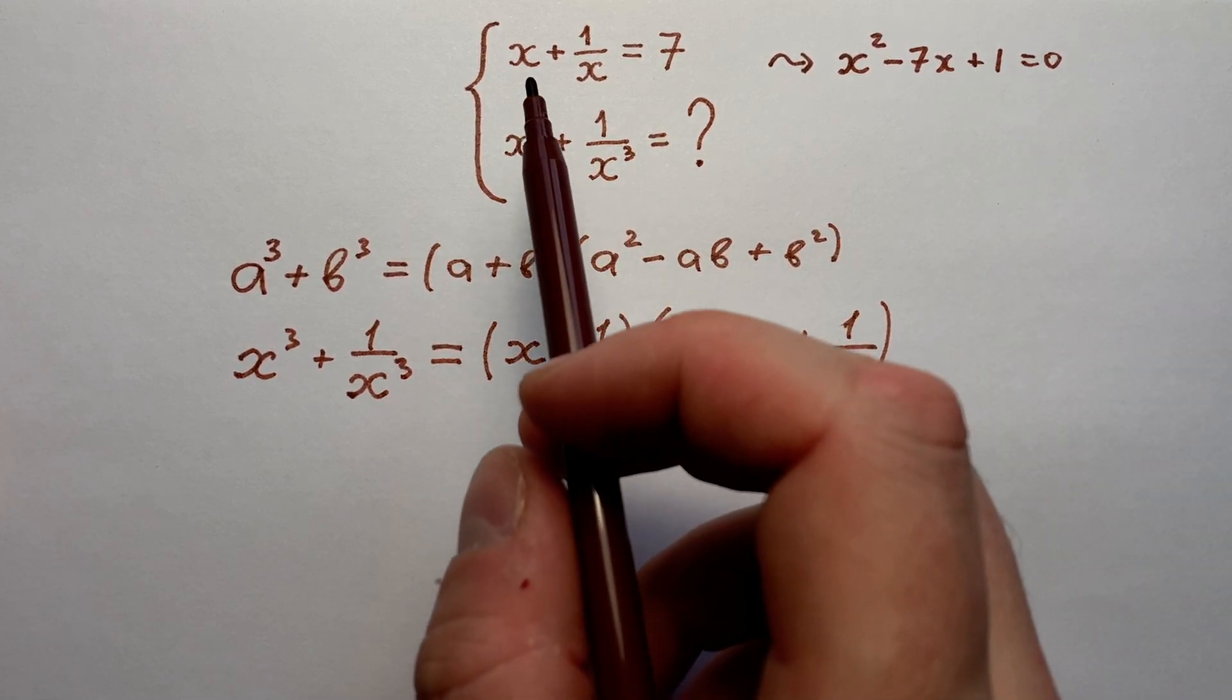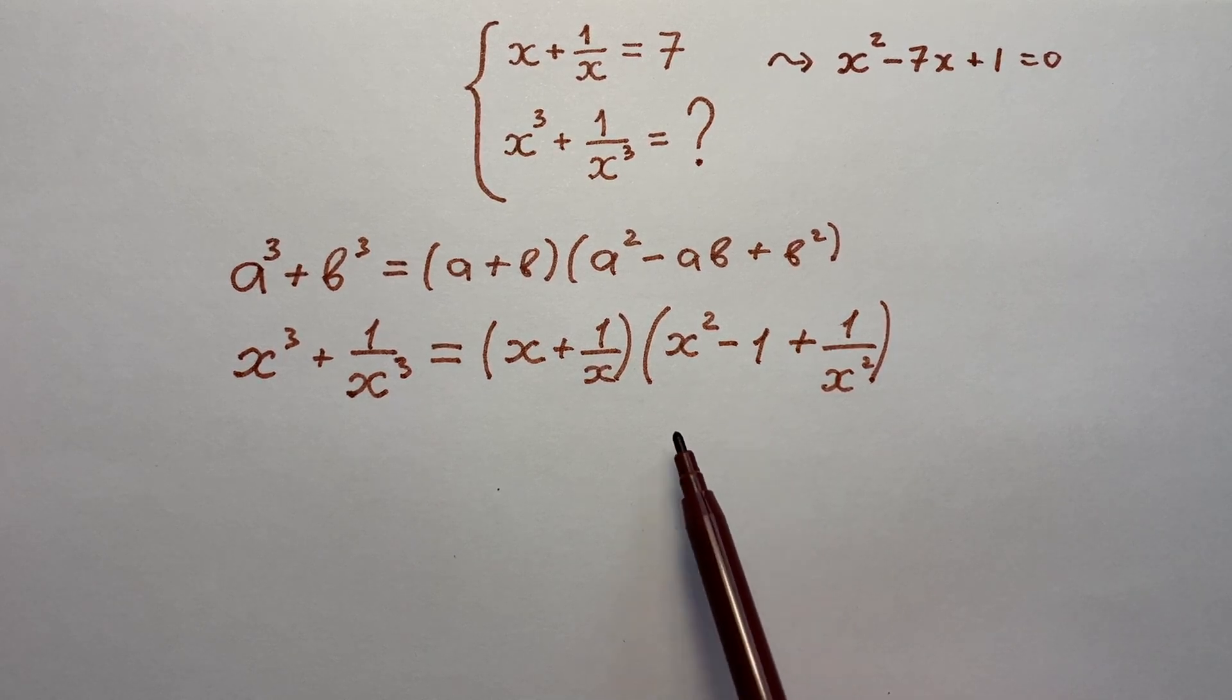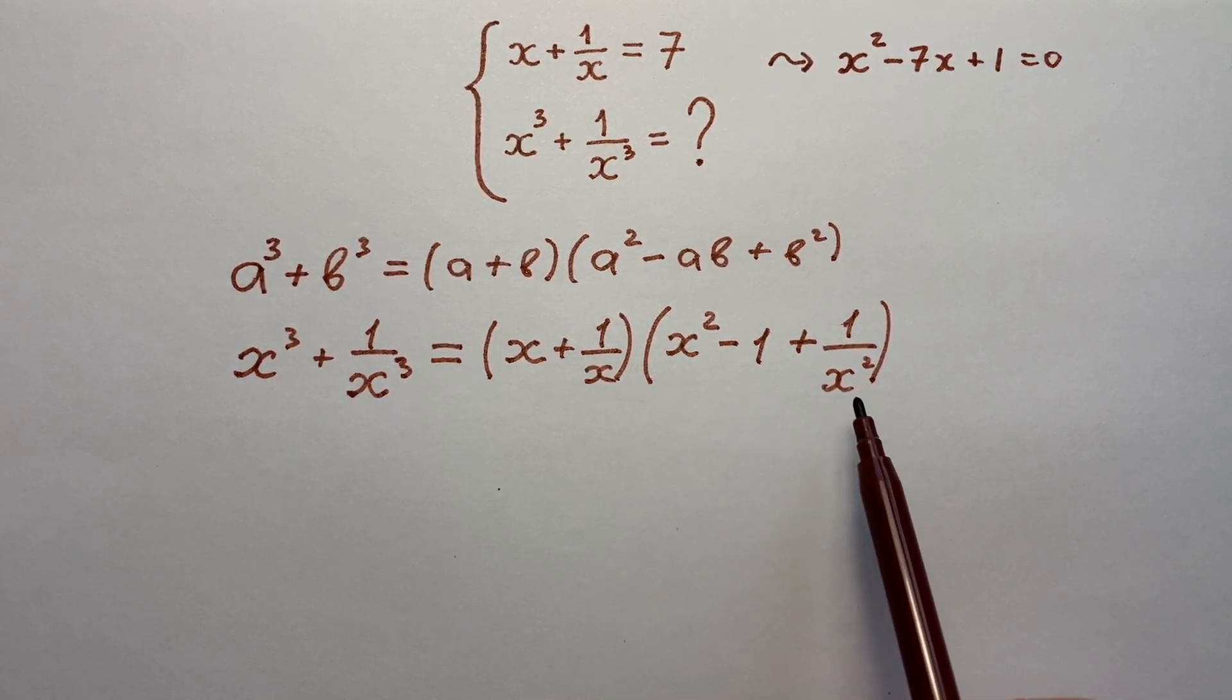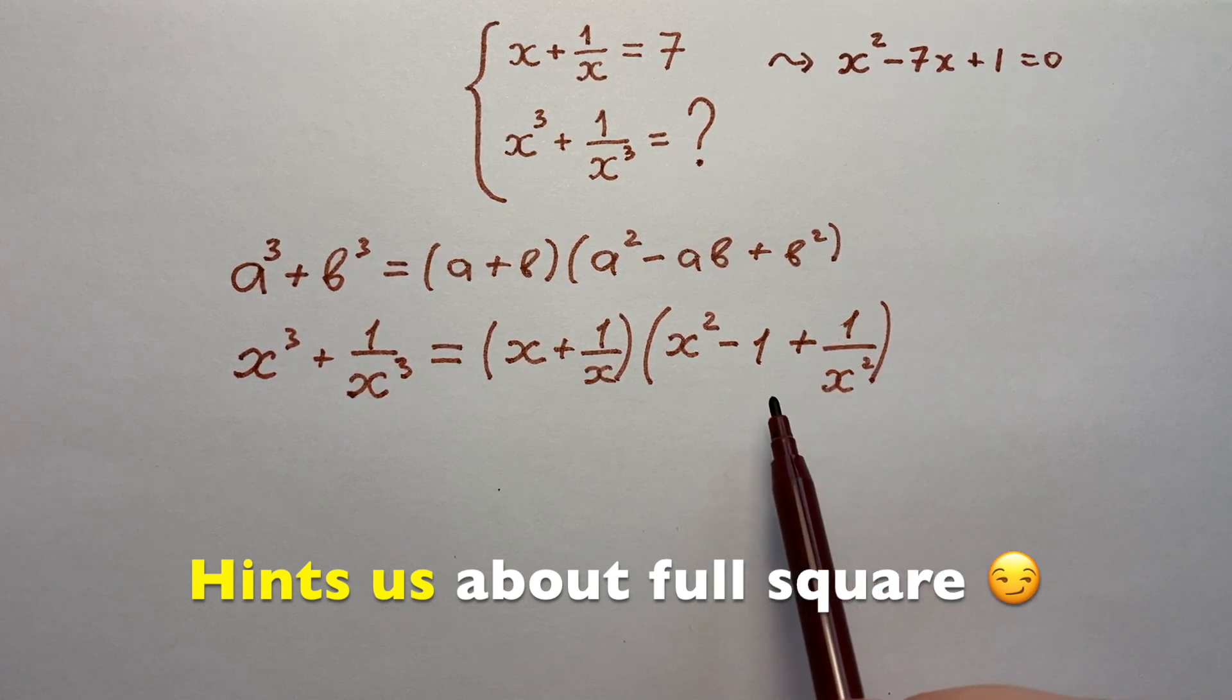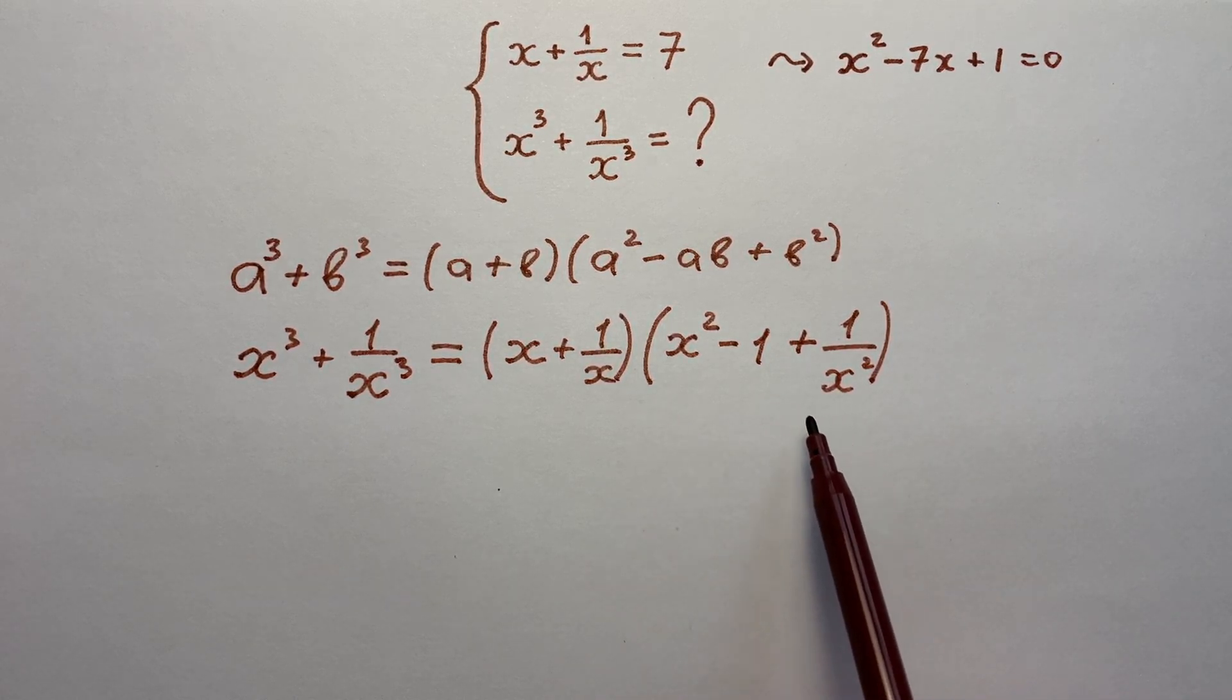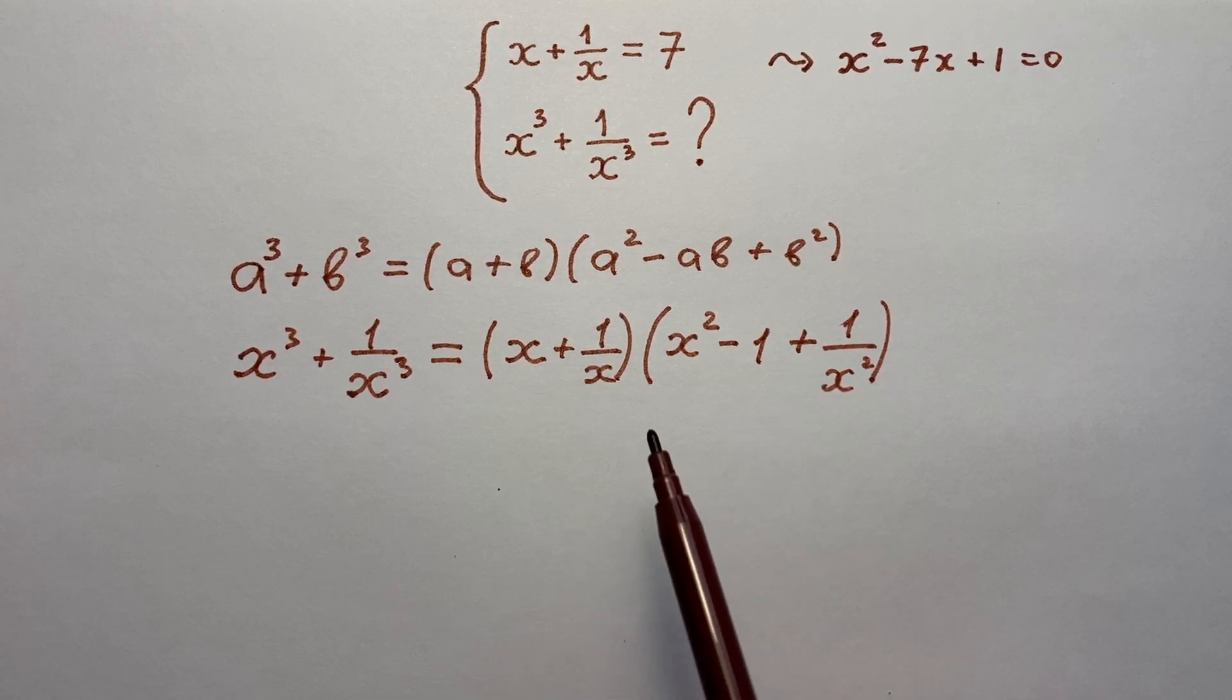First bracket we already know this value x + 1/x = 7. But what about second bracket? Second bracket is strange but it hints us about full square. So let's try to write a full square with the help of two brackets. But before that let's try a very interesting trick.